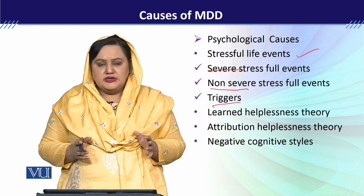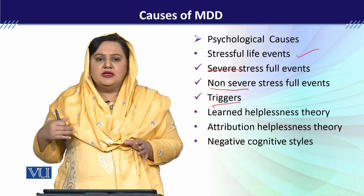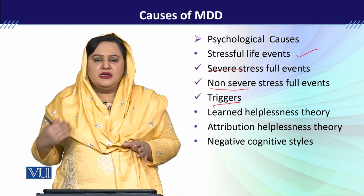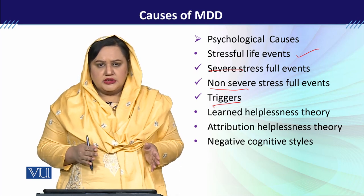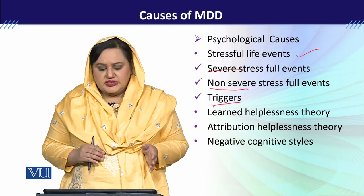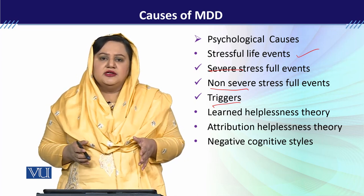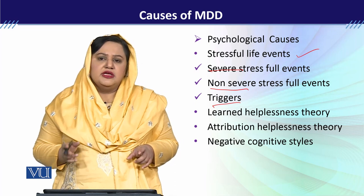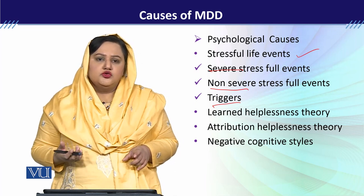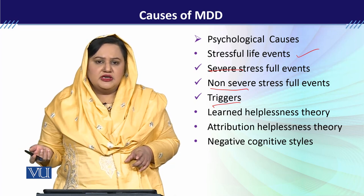They are unable to improve their life. Then there is the Attribution Helplessness theory, which is basically about how people attribute their life events — believing that whatever is happening is because of external agents.